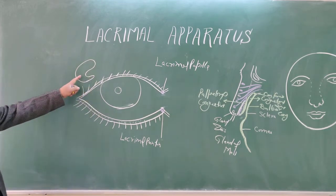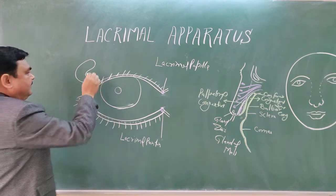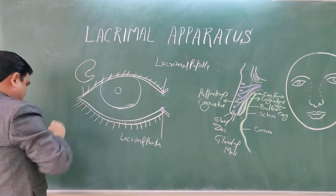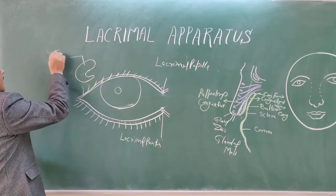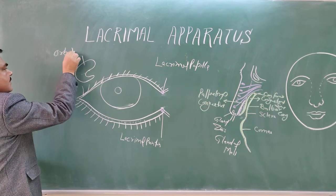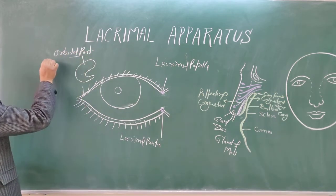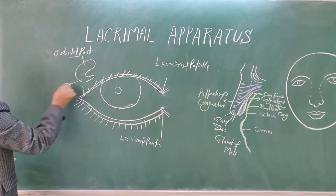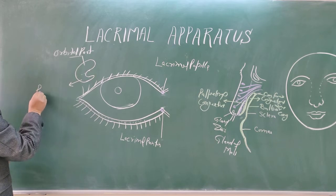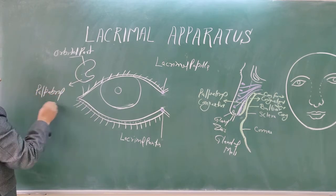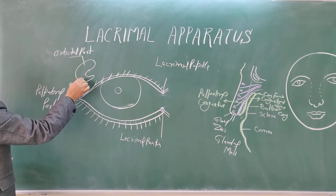The lacrimal gland is situated in the lacrimal fossa on the superolateral side of the orbit. It has two parts: the deep part, also called the orbital part, and the superficial part, also called the palpebral part.